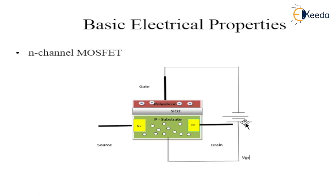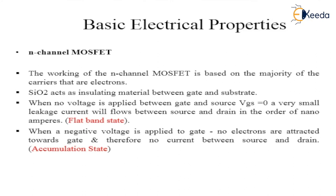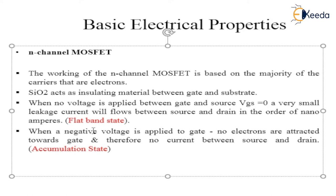To repeat: when a negative voltage is applied to the polysilicon gate, repulsion occurs — the negative gate repels electrons, and the positive terminal repels holes in the substrate. There is no conduction at all and no free flow of current between source and drain. This is called the accumulation state. Under the flat band state (VGS=0) and the accumulation state (VGS negative), there is no free flow of current.